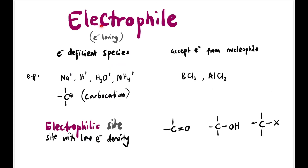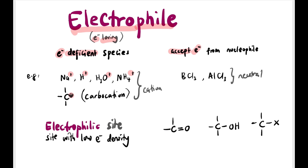An electrophile means 'electron loving' — it loves electrons because it is electron-deficient. It will accept electrons from nucleophiles. Examples include any cation including carbocations (positively charged), and also neutral species with an incomplete octet — Lewis acids such as BCl3 and AlCl3.